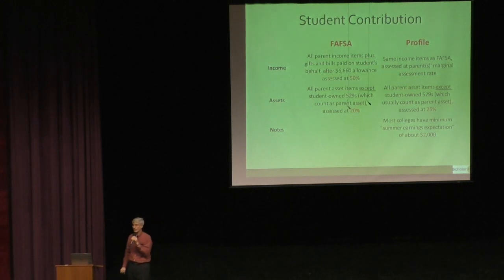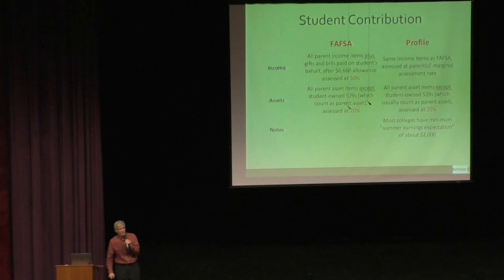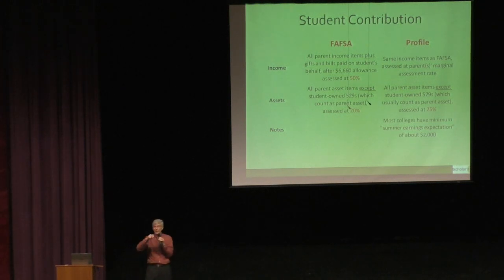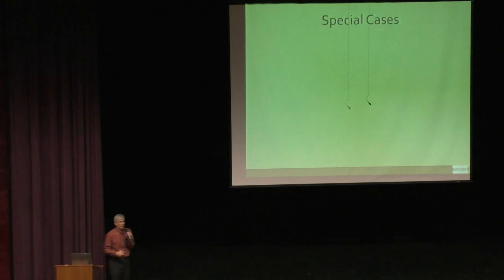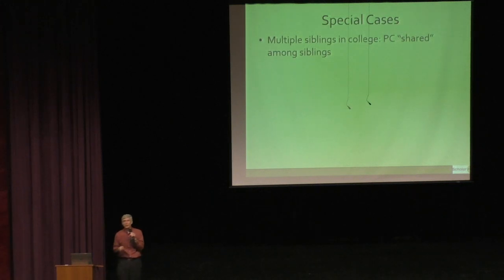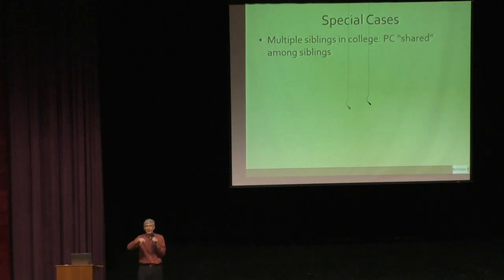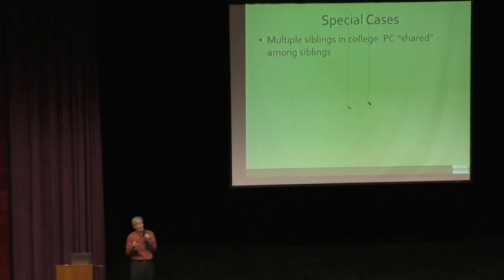These calculations are done each year during college. If your student is a junior in high school, they'll look at 2018 income for year one, 2019 for year two, 2020 for year three, and 2021 for year four. One special case: if there are multiple siblings in college at the same time, the parent portion of the EFC calculation is divided and shared among the siblings. So if your family planning had kids close together, that was pretty good college planning.